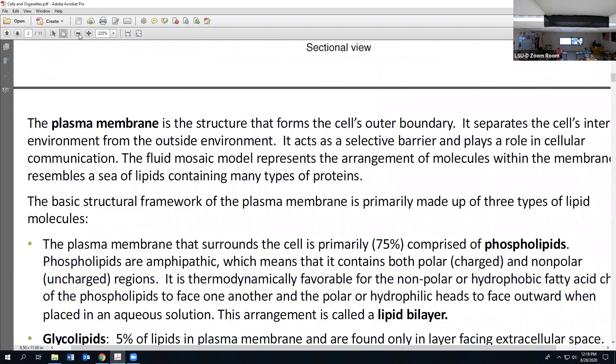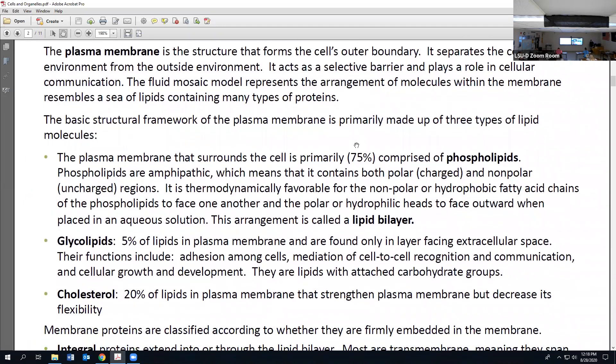Let's talk about that outer boundary, the plasma membrane or cell membrane. The structure that separates the cell's internal environment from the outside environment, like the walls of this room. We can describe it as a selective barrier that plays a role in cellular communication, helping cells communicate with one another through these proteins.